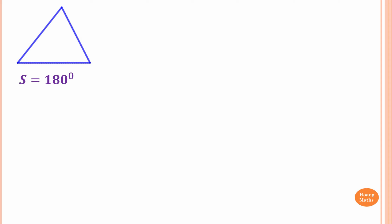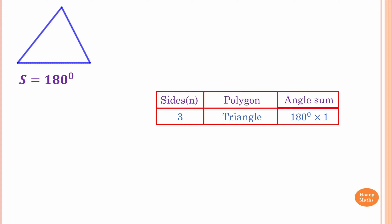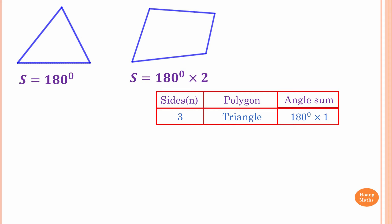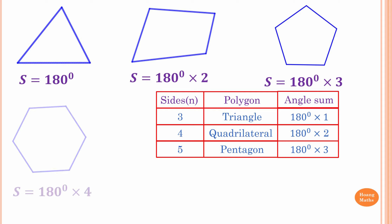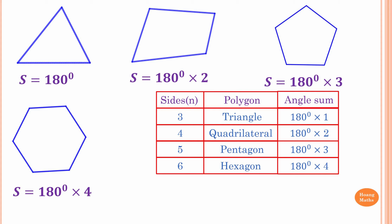Let's summarize what we found. The angle sum of a triangle is 180 degrees — 3 sides, 180 times 1. For a quadrilateral — 4 sides — the angle sum is 180 times 2. For a pentagon — 5 sides — the angle sum is 180 times 3. For a hexagon — 6 sides — the interior angle sum is 180 times 4. And for 7 sides it's 180 degrees times 5.